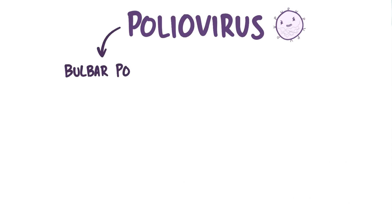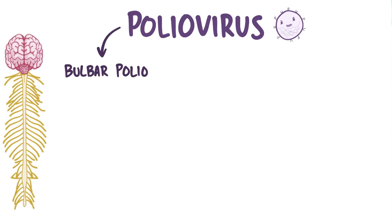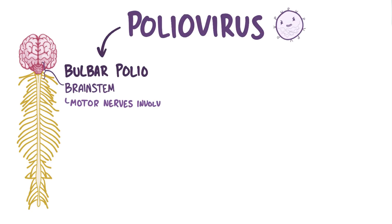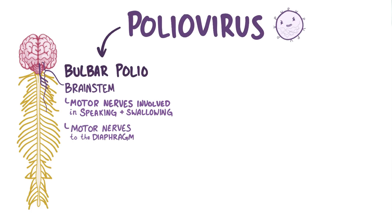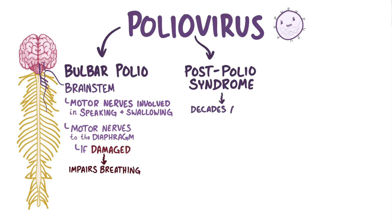On rare occasions, poliovirus can cause bulbar polio, which is when it affects a part of the brain stem that has motor nerves involved in speaking and swallowing. This part of the brain stem also sends motor nerves to the diaphragm, and so if they get damaged it can impair breathing. Some people also develop post-polio syndrome many decades after the initial infection.